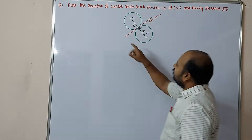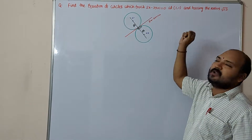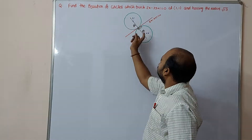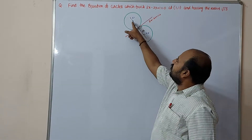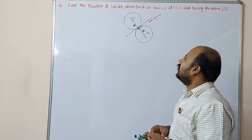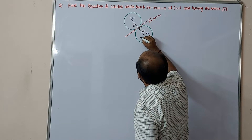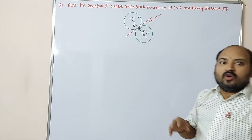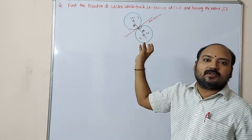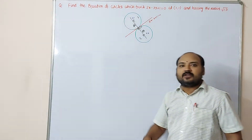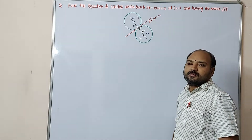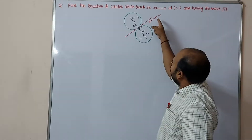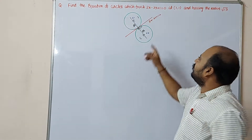According to the question, this is the way we have to draw the figure. The line 2x minus 3y plus 1 equal to 0 touches the circles at (1,1), having radius root 13. We don't know the centers of the required circles — this is one circle center, this is another circle center. We need to calculate the centers of those circles, assuming the center is (h, k).